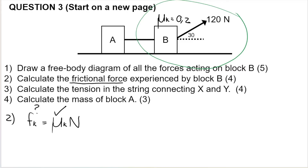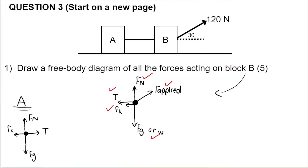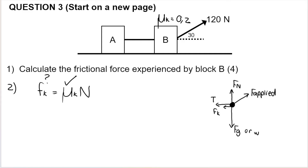We need to go back to the free body diagram and consider the components of F applied. The applied force consists of F applied parallel (horizontal component) and F applied perpendicular (vertical component). To find the normal force, we need all three forces acting up or down: FN, FG, and F applied perpendicular. Those three forces added together must equal zero, because the box is not accelerating in the up-down direction.